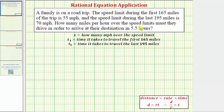We'll first assign a variable for the unknown. Let x be equal to how many miles per hour over the speed limit they must drive in order to reach the destination in 5.5 hours. This means the time it takes to travel the 165 miles plus the time it takes to travel the last 195 miles must equal 5.5 hours.